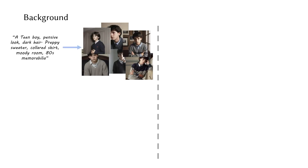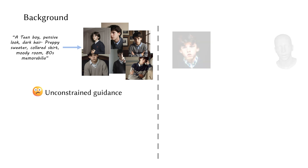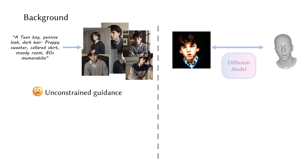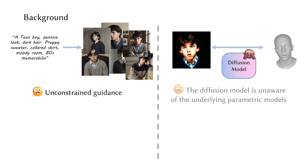First, a single text prompt in a diffusion model maps to a wide range of images, resulting in under-constrained appearance and geometry guidance. Second, the diffusion model's predictions typically align poorly with the underlying parametric model, which causes artifacts during animation.